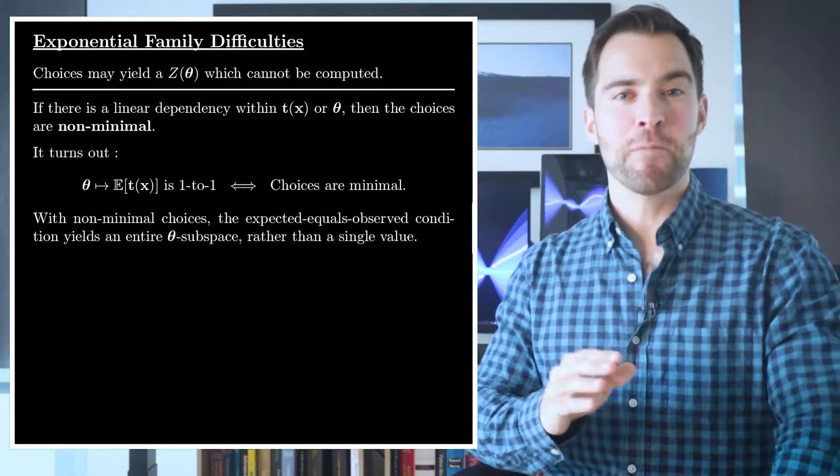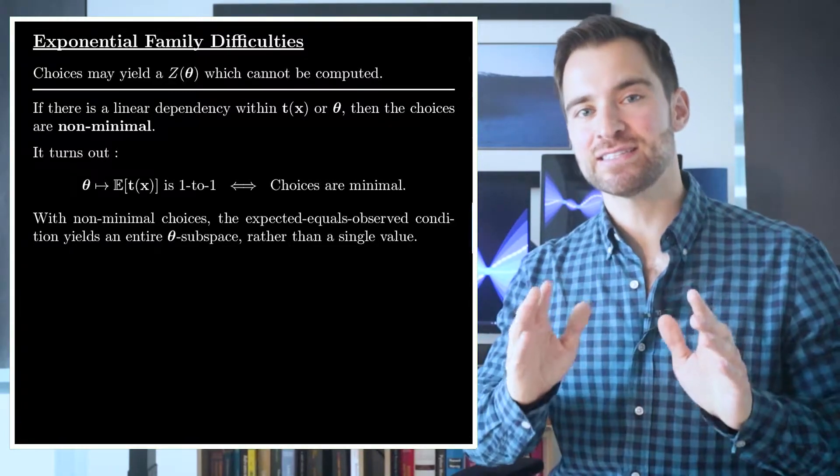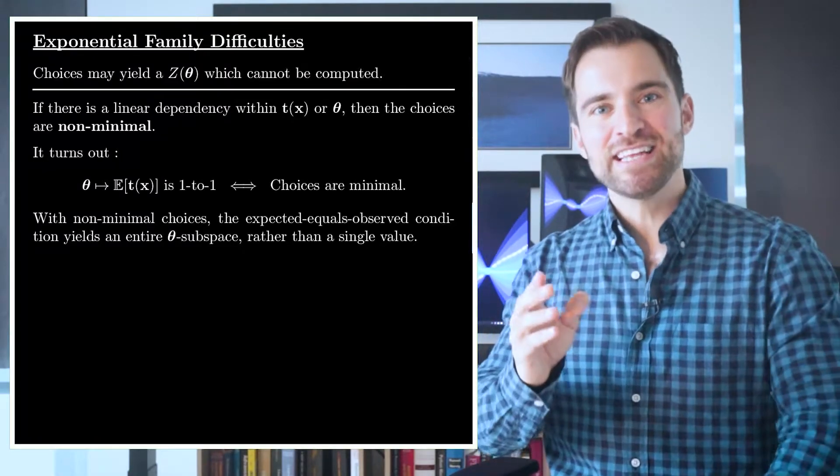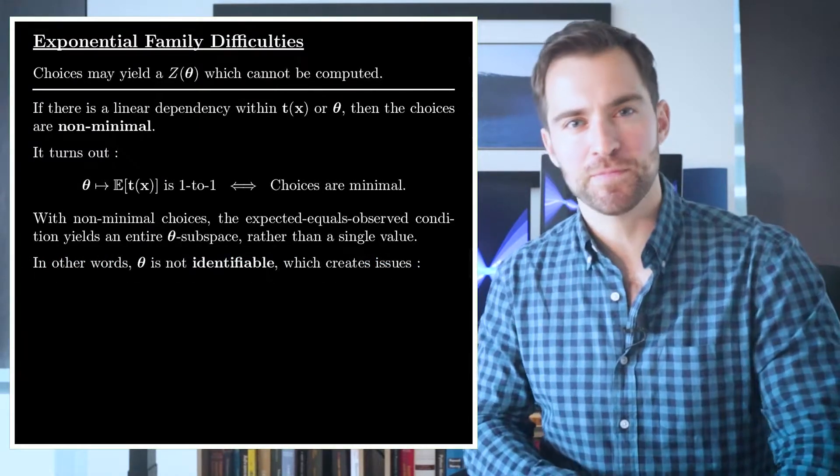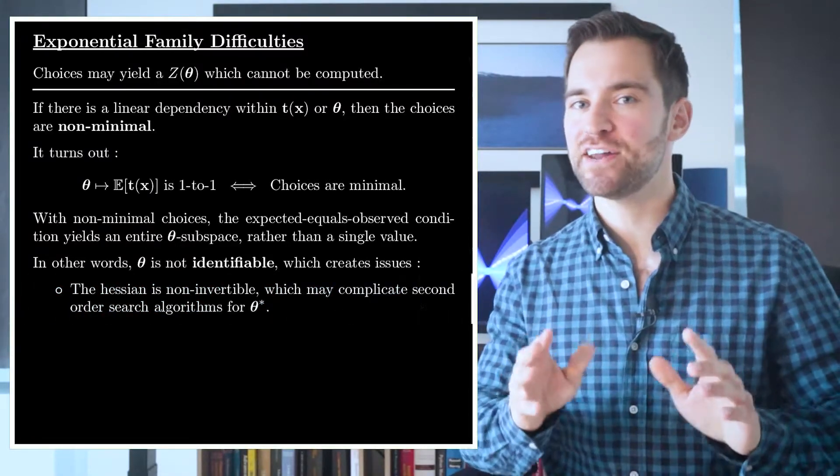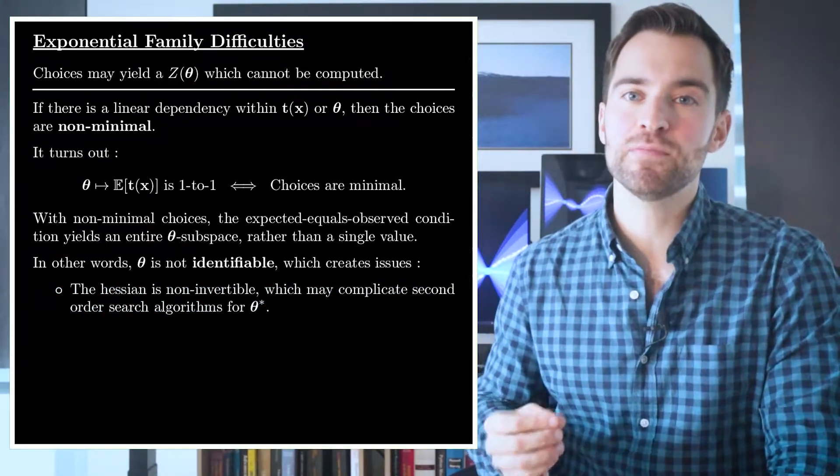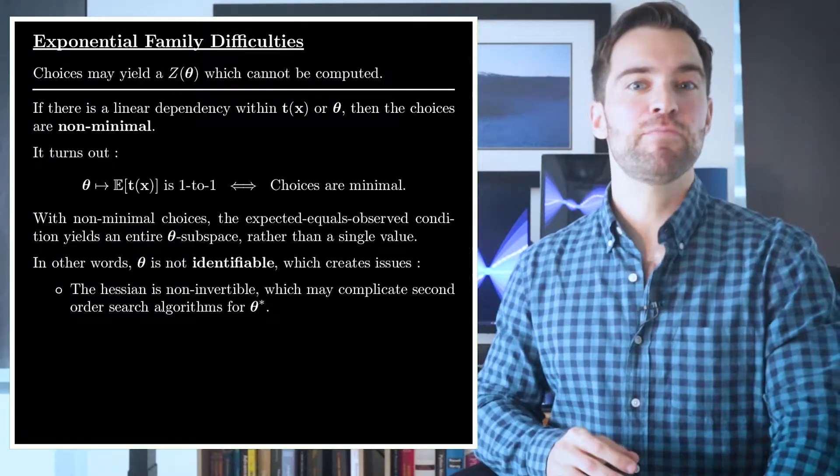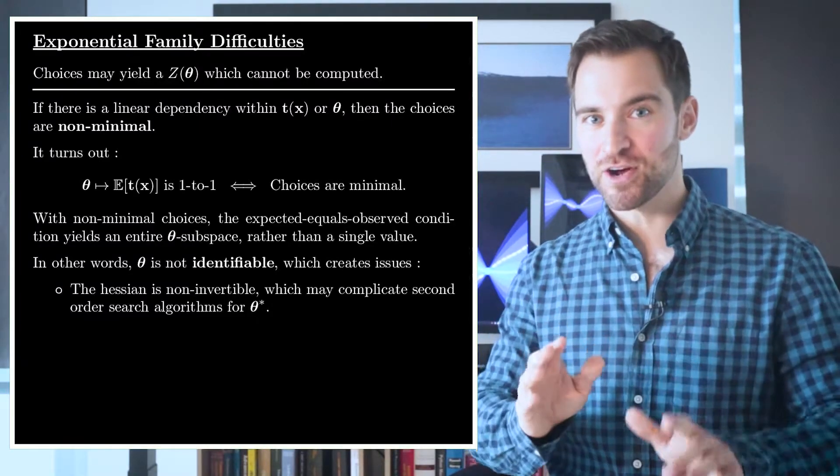If they are non-minimal, then there is an entire θ subspace, which meets our expected equals observed condition. In other words, there are many values of θ which maximize the likelihood. More broadly, this means θ isn't identifiable. One consequence, among several, is it means your Hessian is non-invertible. So if you're using second-order methods to search for the MLE, then it may break when it tries to invert the Hessian matrix.